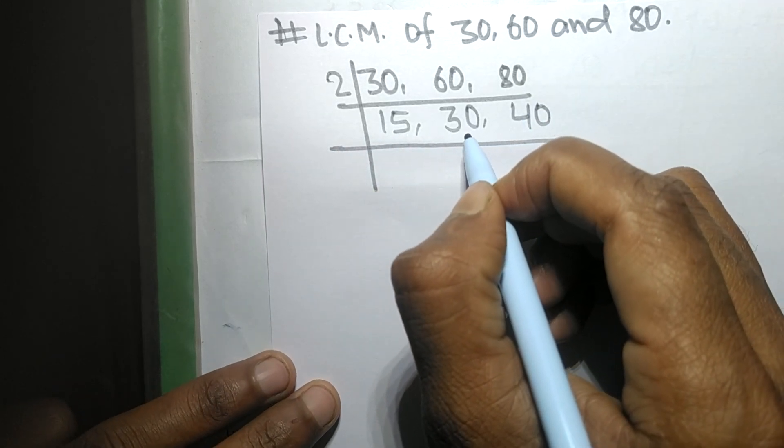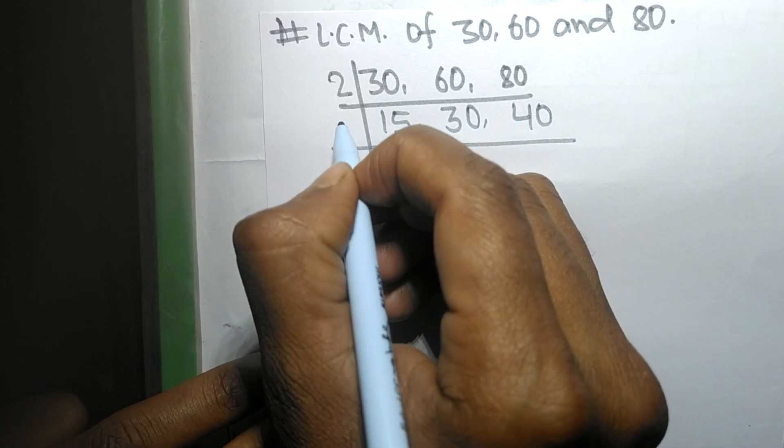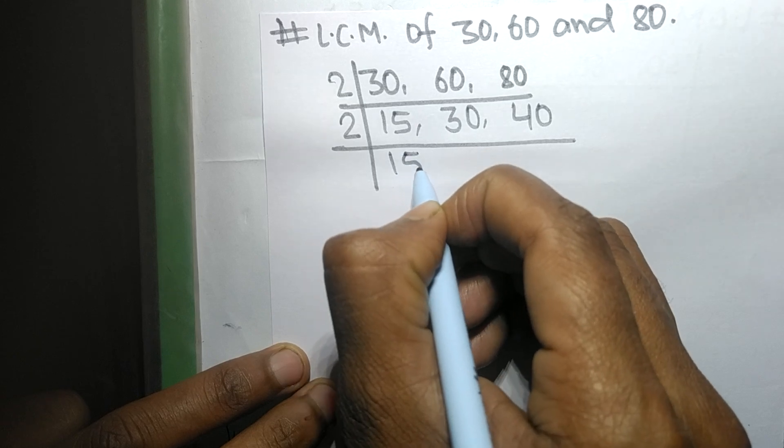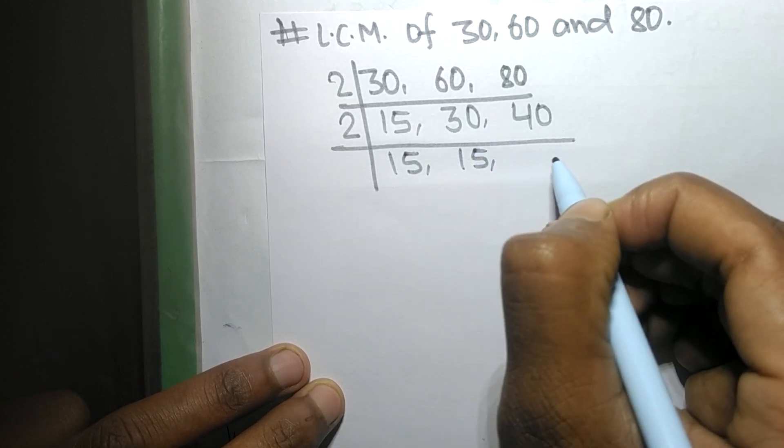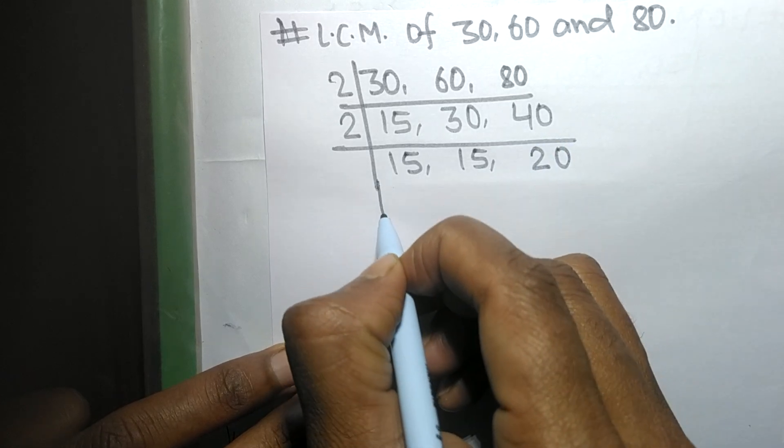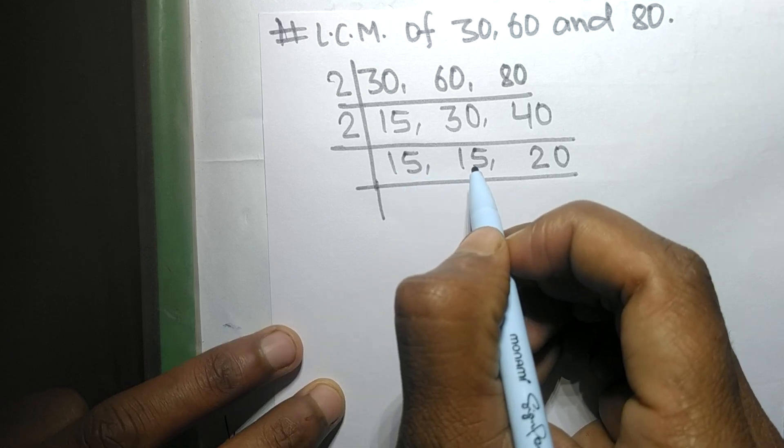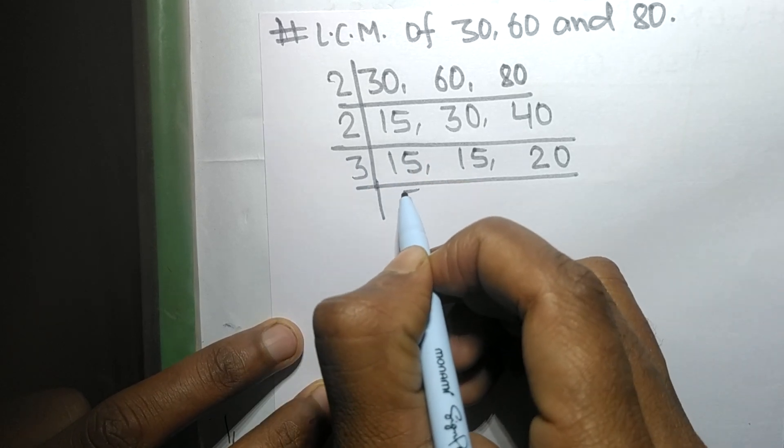Now this 30 and 40 are exactly divisible by 2, 15 not divisible so it is same. 2 times 15 mean 30, 2 times 20 mean 40. So now these both 15 are exactly divisible by 3, so 3 times 5 mean 15.